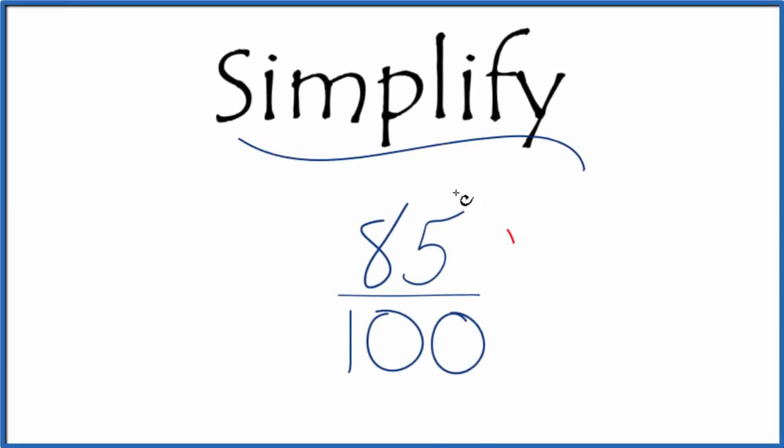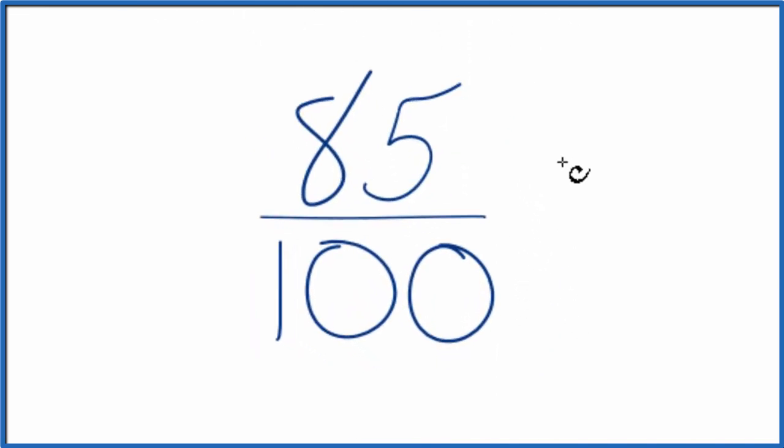Let's simplify the fraction 85 over 100. First off, what we're trying to do is find another fraction that's equivalent to 85 over 100. It has the same value, it's just reduced to lowest terms.